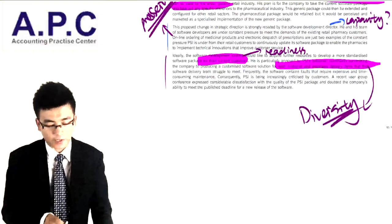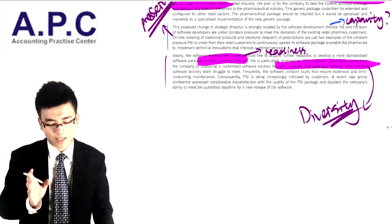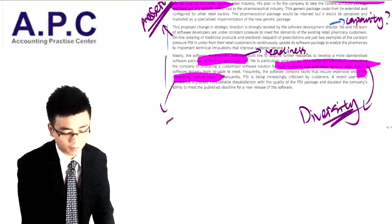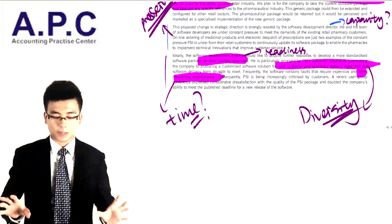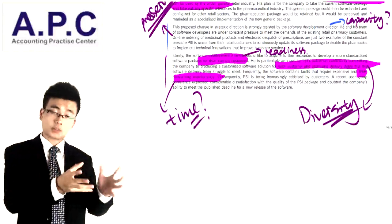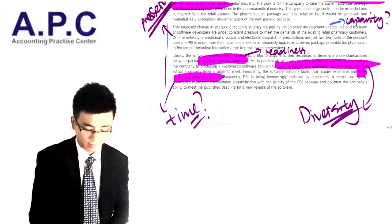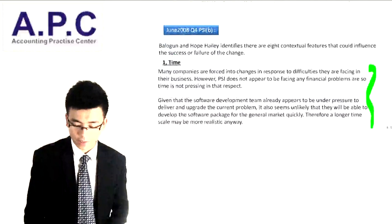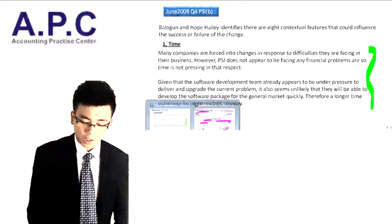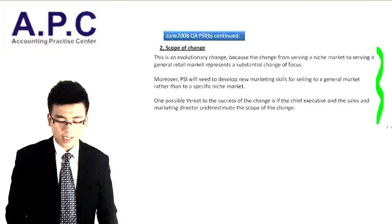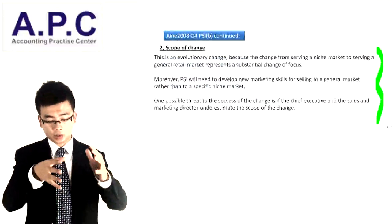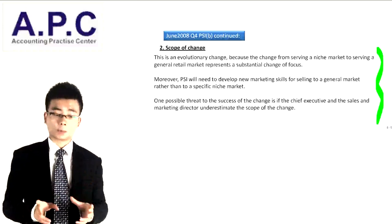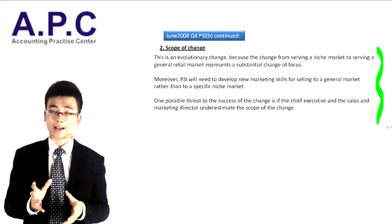Also, the software frequently contains faults requiring expensive and time-consuming maintenance. You can argue that the time to implement this particular change will be much longer because you need to solve existing problems before moving to a new product. The scope of the change is identified as an evolution change — a big change within the business — and it is the proactive change. You can identify these as possible threats to the successful change, especially when the software development team tries to resist.